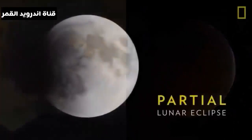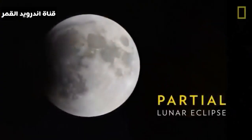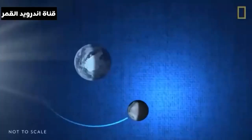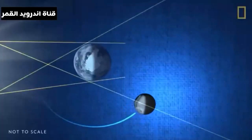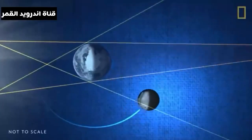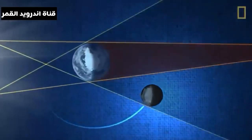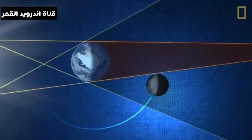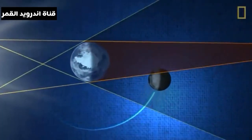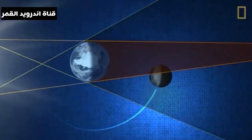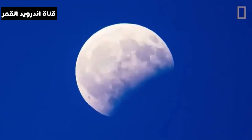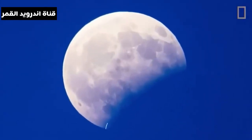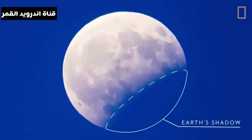A partial lunar eclipse, the second type, occurs when the Earth, Moon, and Sun don't perfectly align, so only part of the Moon passes into Earth's umbra. Earth's shadow appears very dark on the side of the Moon facing Earth.